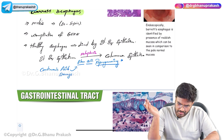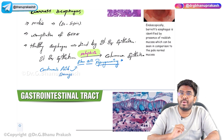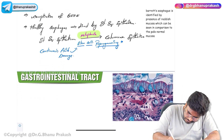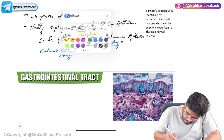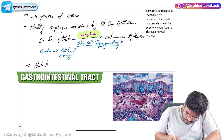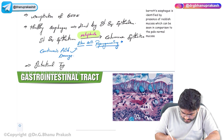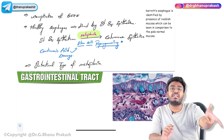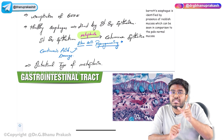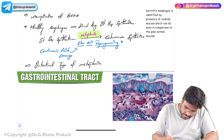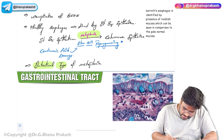The stratified squamous epithelium is converted into columnar type of epithelium — this is called metaplasia. In your exams they will also ask: it is metaplasia, but which type? This is called intestinal type of metaplasia. And why do we call it intestinal type, not gastric type of metaplasia?